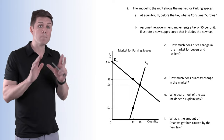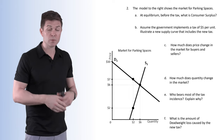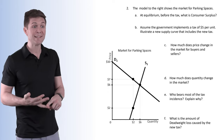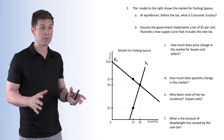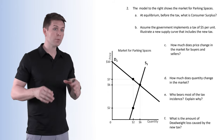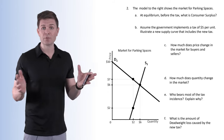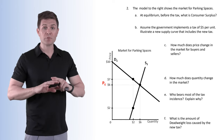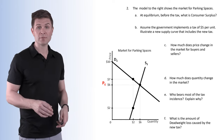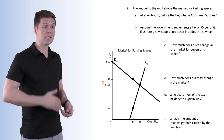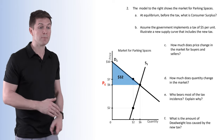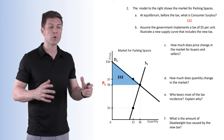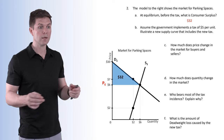Number two: we're looking at the market for parking spaces, which has a relatively elastic demand and a relatively inelastic supply curve. At equilibrium before the tax, what is consumer surplus? Our equilibrium price before any tax is $6, so everything above $6 but below the demand curve is our consumer surplus — that's $32 in consumer surplus.